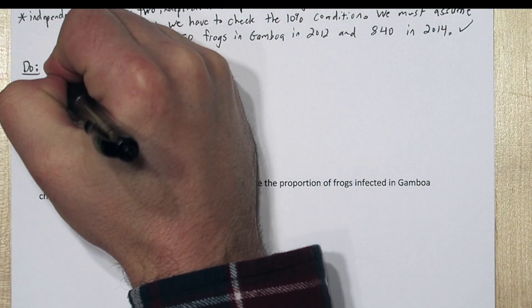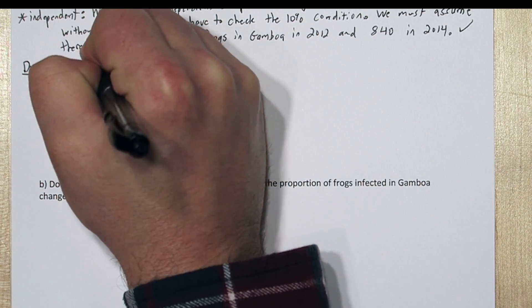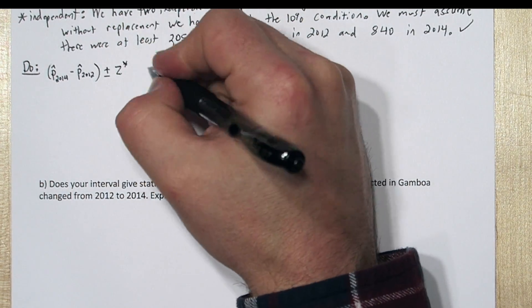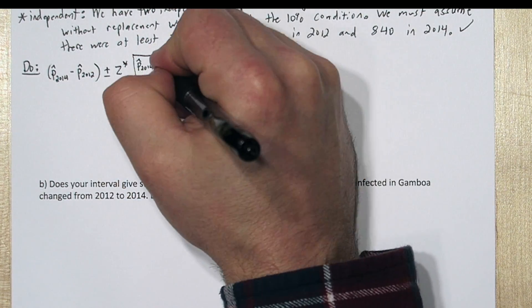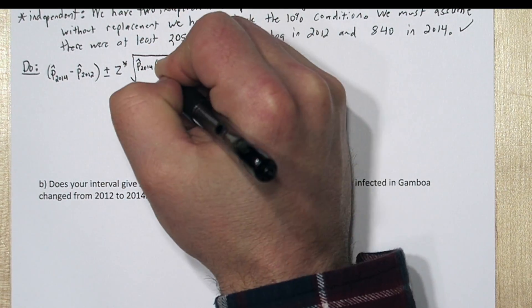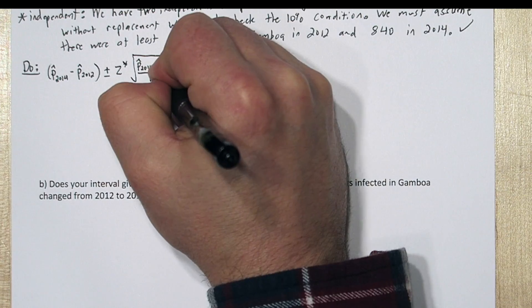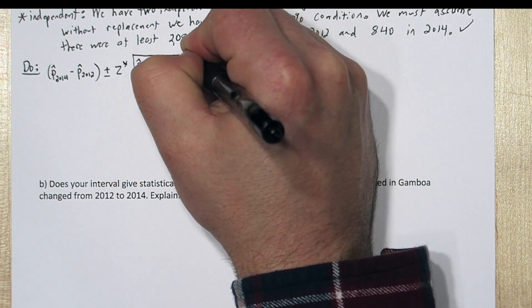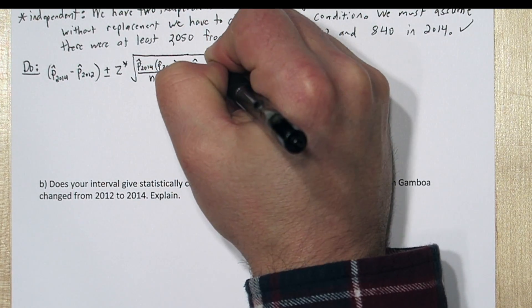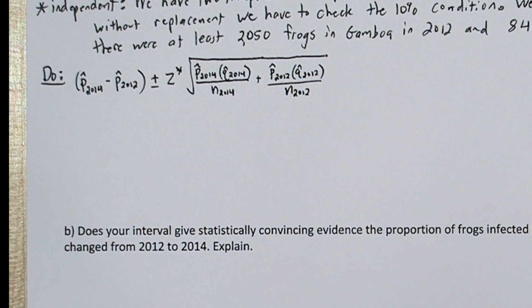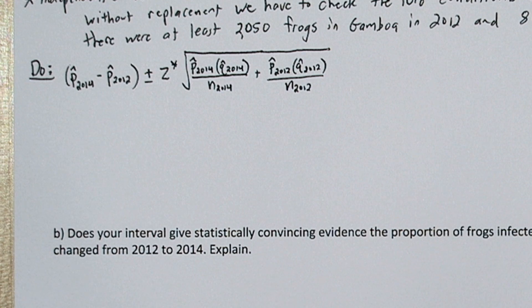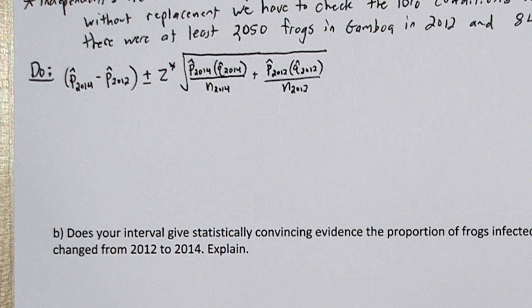Now we're ready for the do step. All confidence intervals are a point estimate plus or minus a margin of error. For our two-sample z interval for difference, we're going to use p-hat sub 2014 minus p-hat sub 2012 for our point estimate, then add and subtract z-star times our standard error.